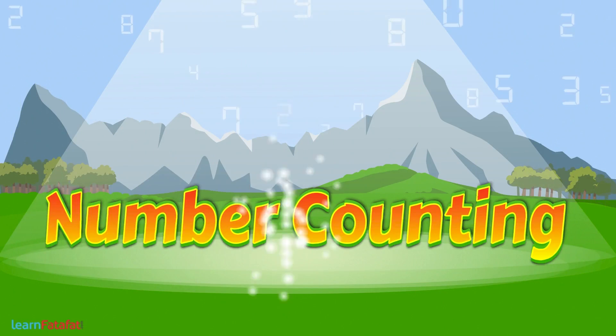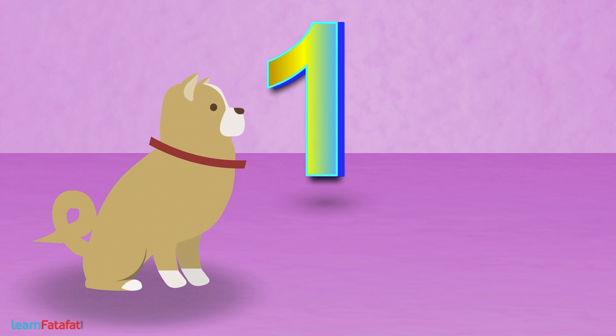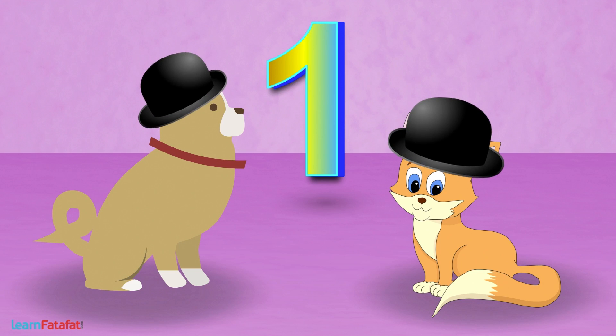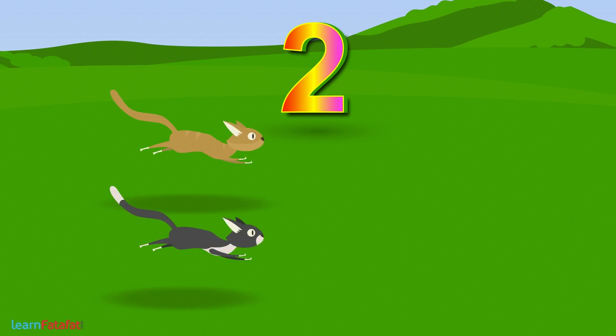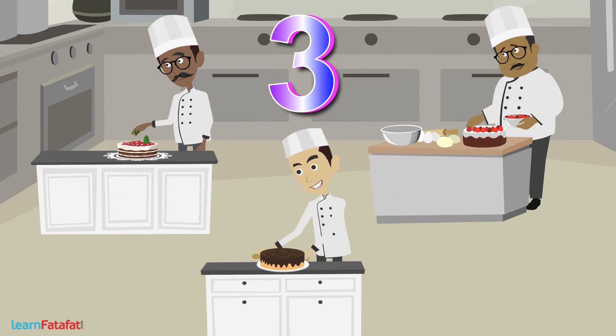Let's learn number counting. One dog, one cat, everyone has one hat. Two cats, two rats, cats chase two rats. Three cooks, three cakes, cooks bake three cakes.